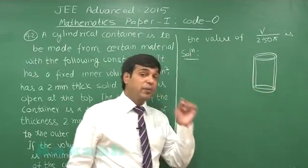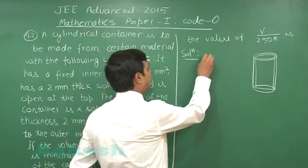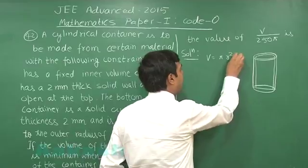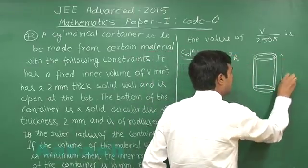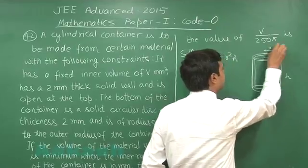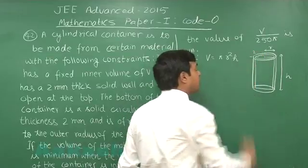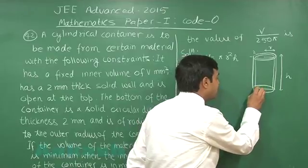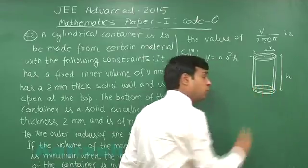Volume is to be minimum, volume of the material used. It is given to me capital V, it is pi r square h, where h is the height and r is the inner radius. This one is given to me 2 mm. Similarly for the lower part, the thickness is 2.